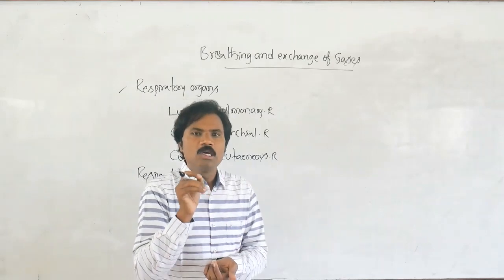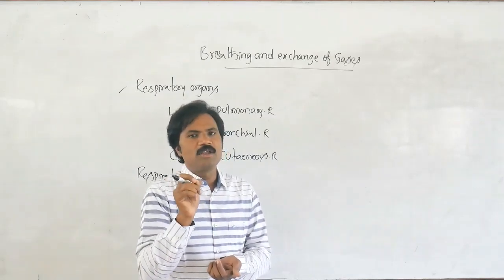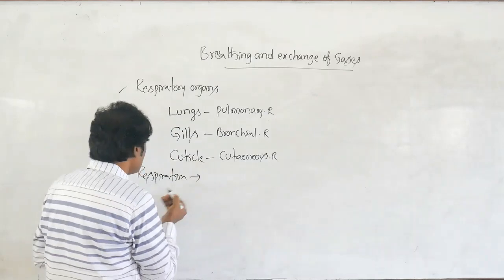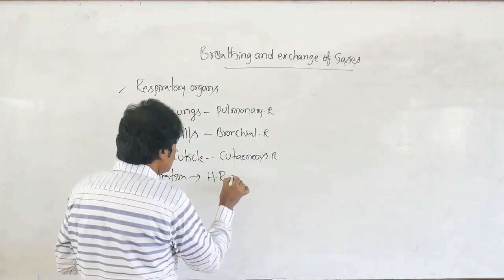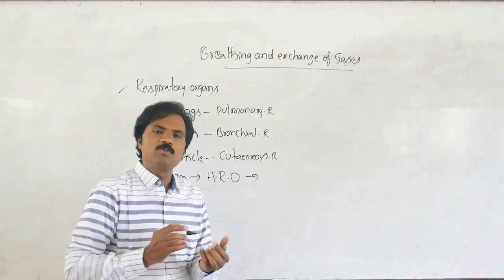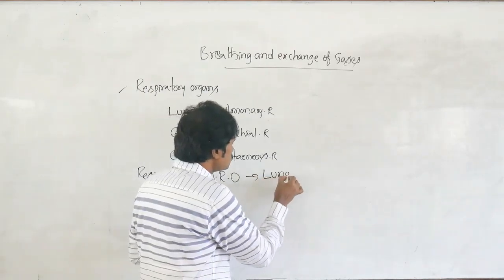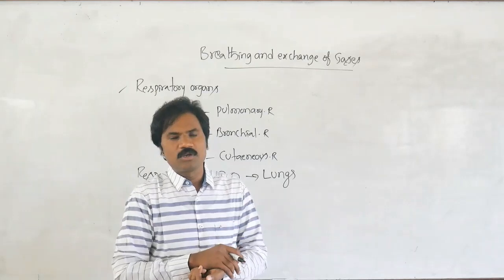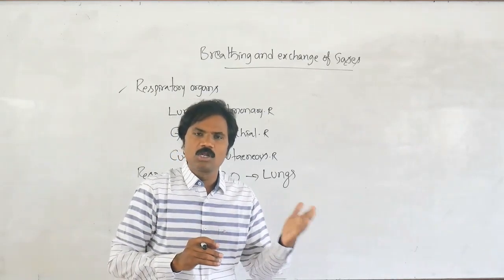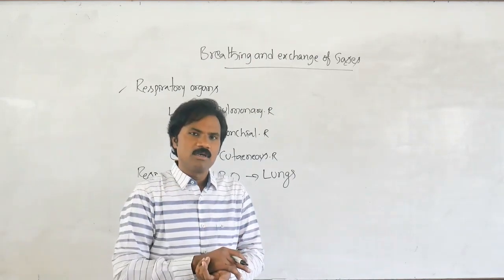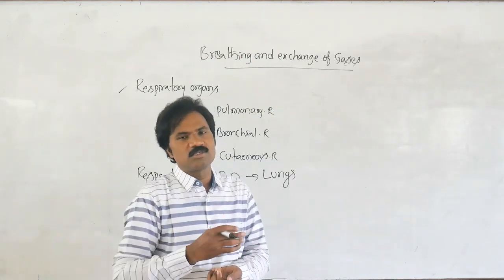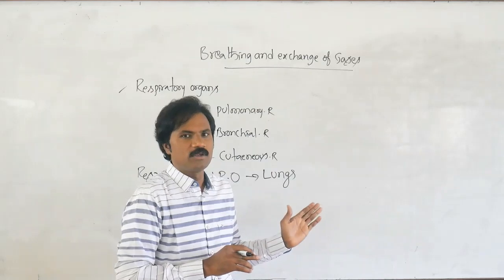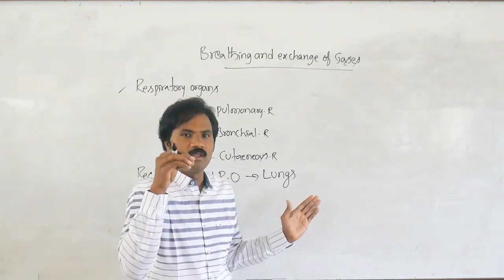Now let's discuss the human respiratory organs. The human respiratory organs are the lungs. How many lungs are present? There are two lungs. The right lung has three lobes and the left lung has two lobes. It is a sac-like structure. The lungs are the respiratory organs in human beings.